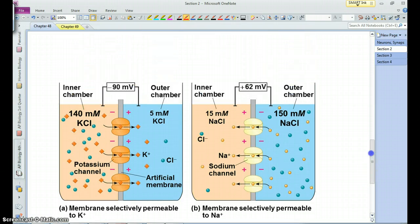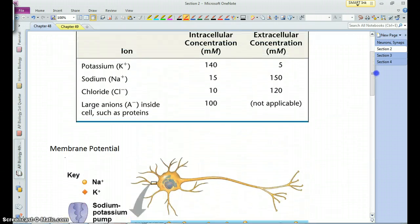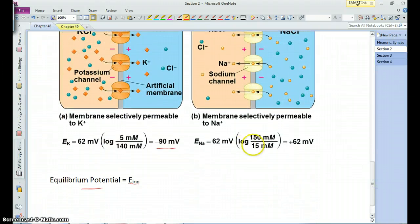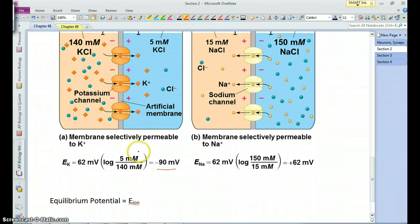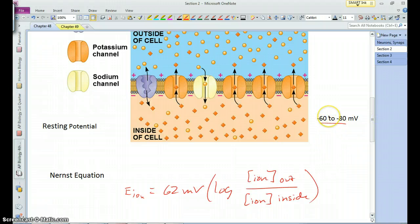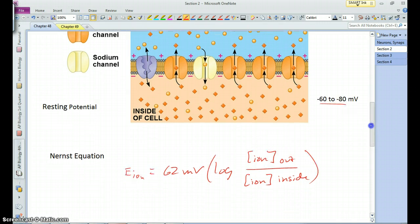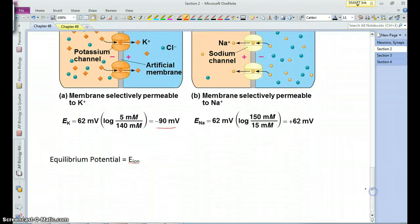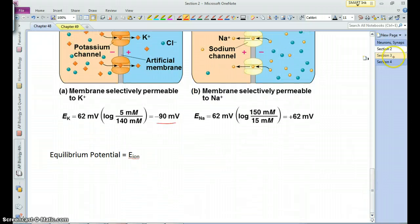Now with the sodium, we see again it's 150 on the outside and 15 on the inside, and we get a positive value, plus 62 millivolts. Now that's just the potential for each individual ion. Well, at rest potassium is playing a much bigger role on determining the resting potential because a lot more of it is moving out of the cell. So together the resting membrane potential is a negative value because of the potassium moving out.